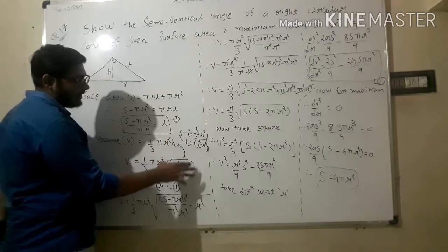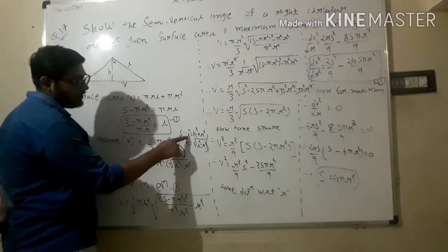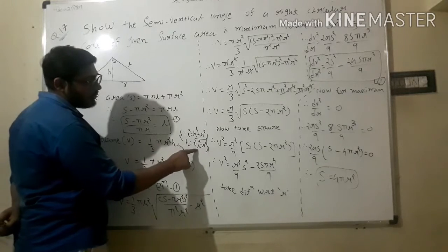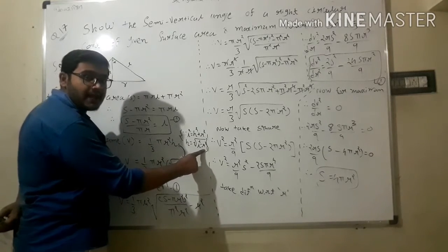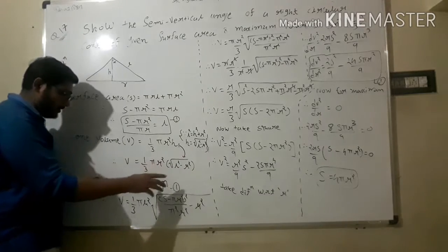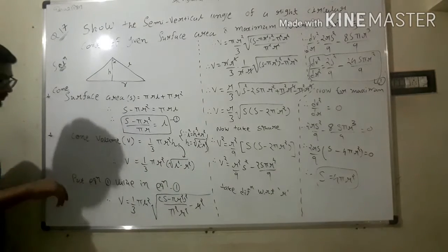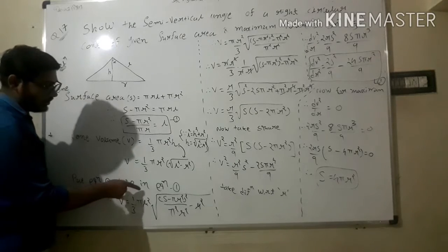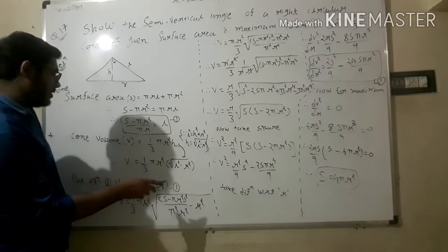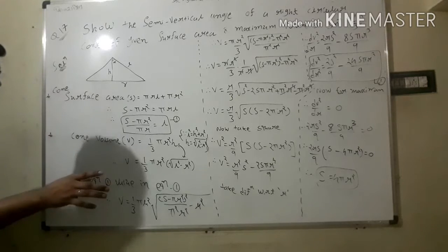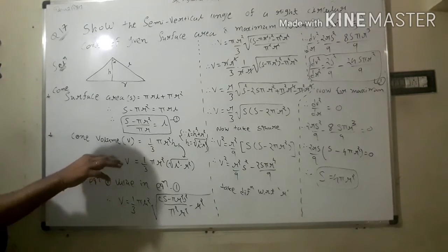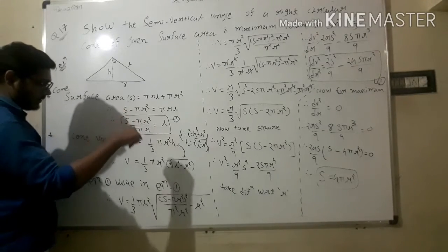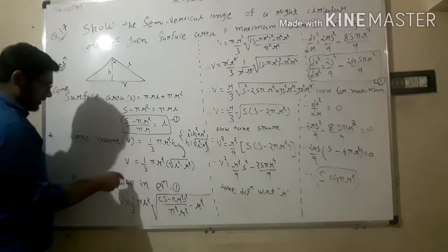Here we note that from l² = h² + r², we get h = √(l² - r²). Now put the value from equation 1 — that is, l = (S - πr²)/(πr) — into the volume equation above. So we substitute this value of equation 1 into the volume expression.